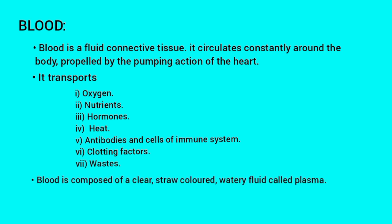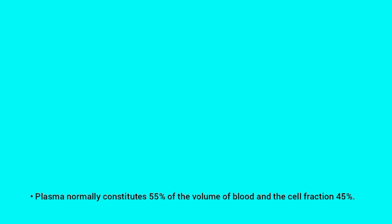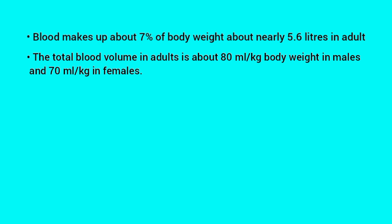Blood is composed of a clear straw-colored watery fluid called plasma. Plasma normally constitutes 55% of the volume of blood, and the cell fraction 45%. Blood makes up about 7% of body weight, nearly about 5.6 liters in an adult. The total blood volume in adults is about 80 milliliters per kilogram body weight in males and 70 milliliters per kilogram in females.